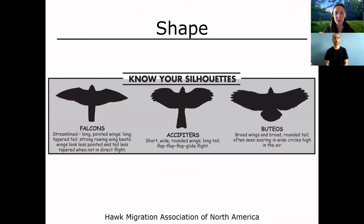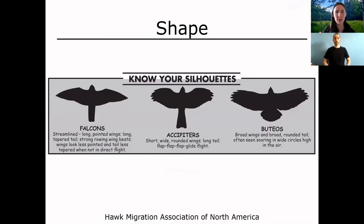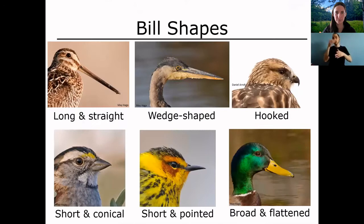Shape can also be important when looking at birds in flight, especially birds of prey — falcons, accipiters, and buteos, which are your hawks. They will have different shapes of wings and tails. We won't get really into this because it can be quite complex, but just note that looking at the shape of birds while they're flying can also be really helpful.